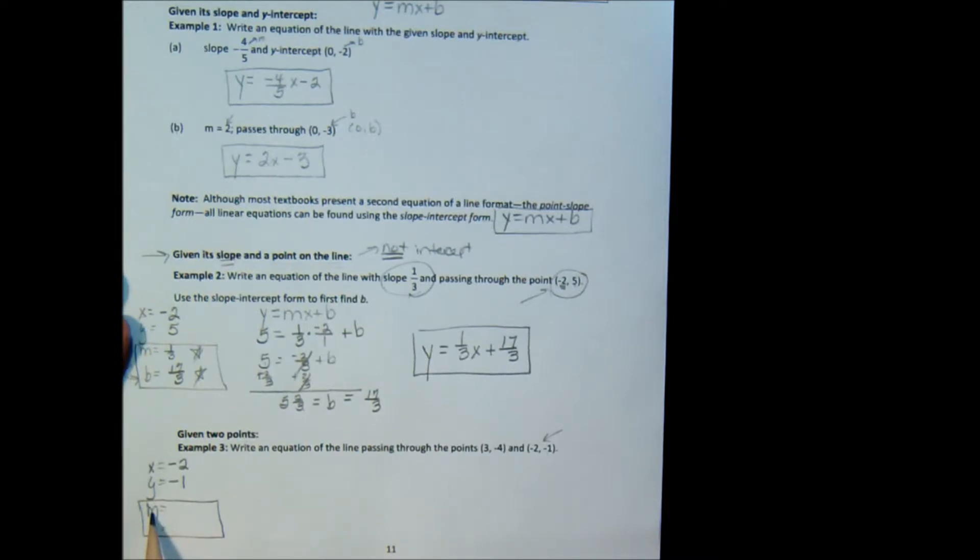However, unlike the last problem, example 2, I don't have the slope. I wasn't given the slope. So what we're going to have to do is determine the slope using our slope formula. So there's some work that you have to do up front here. So I labeled my points x1, y1, x2, y2.